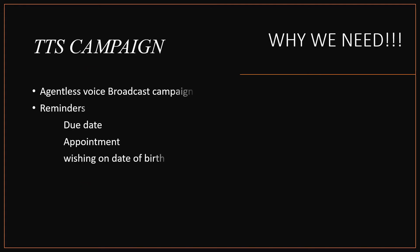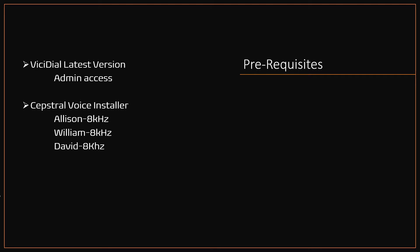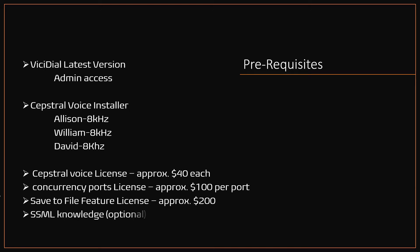The text-to-speech campaign is useful for agentless dialing, for reminders like due date announcements, appointment announcements, and wishing someone on their date of birth. Prerequisites for creating a survey campaign with Kaptrel TTS: VC Dial latest version with full admin access, Kaptrel voice installer file for preferred voices like Alison, William, or David, Kaptrel voice license, concurrency port license based on number of concurrent calls, and a Kaptrel save-to-file license — required as VC Dial saves TTS files in a folder for playback.